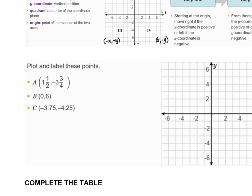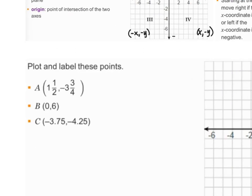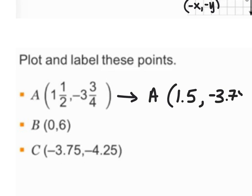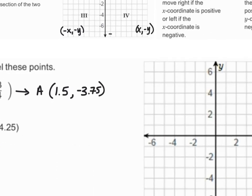We want to plot and label points A, B, and C. Point A is (1½, -3¾), which translates to (1.5, -3.75). The first number is my x-value, and -3.75 is my y-value. I'm going to start at the origin at (0, 0) and move over 1.5 to the right.